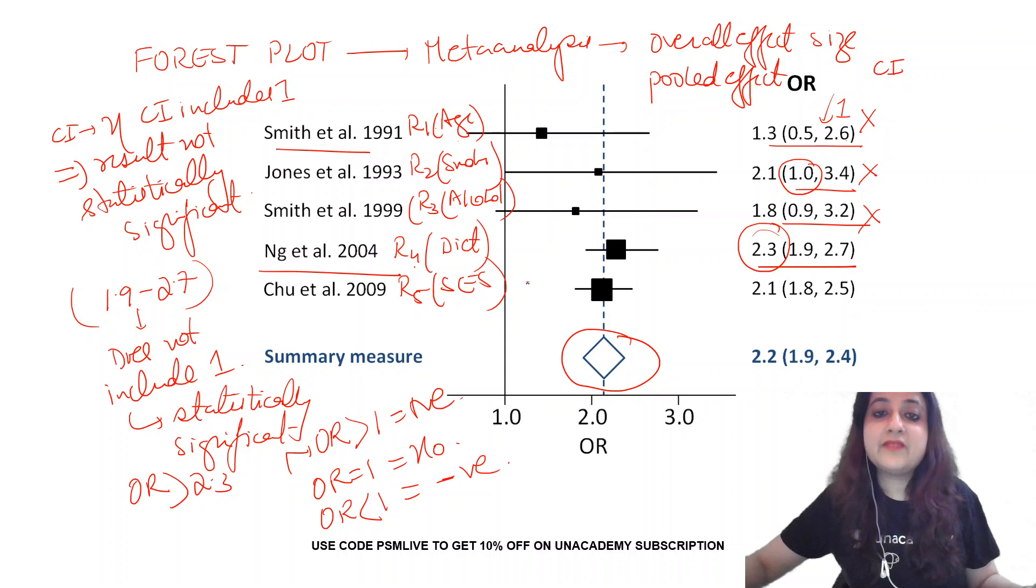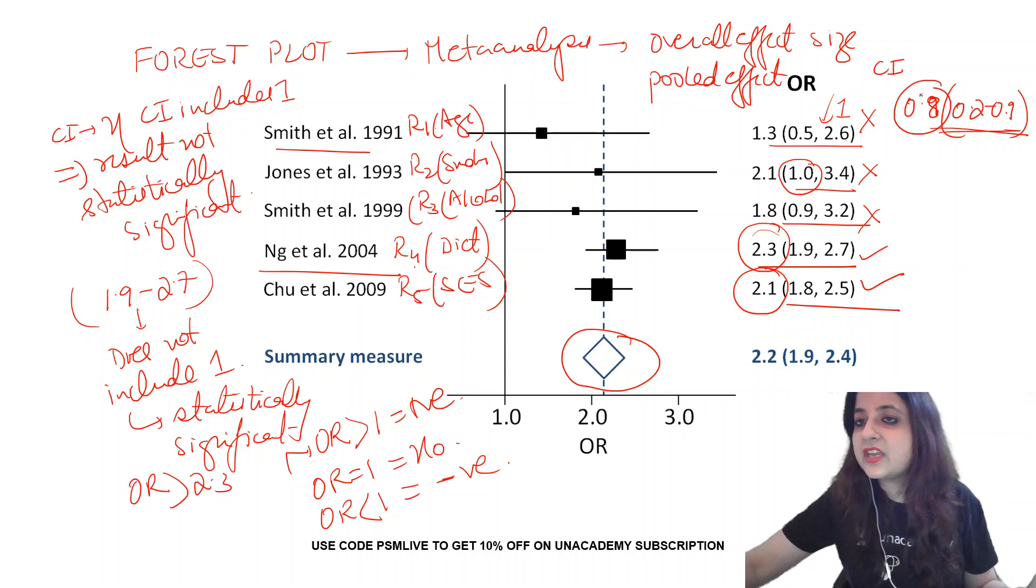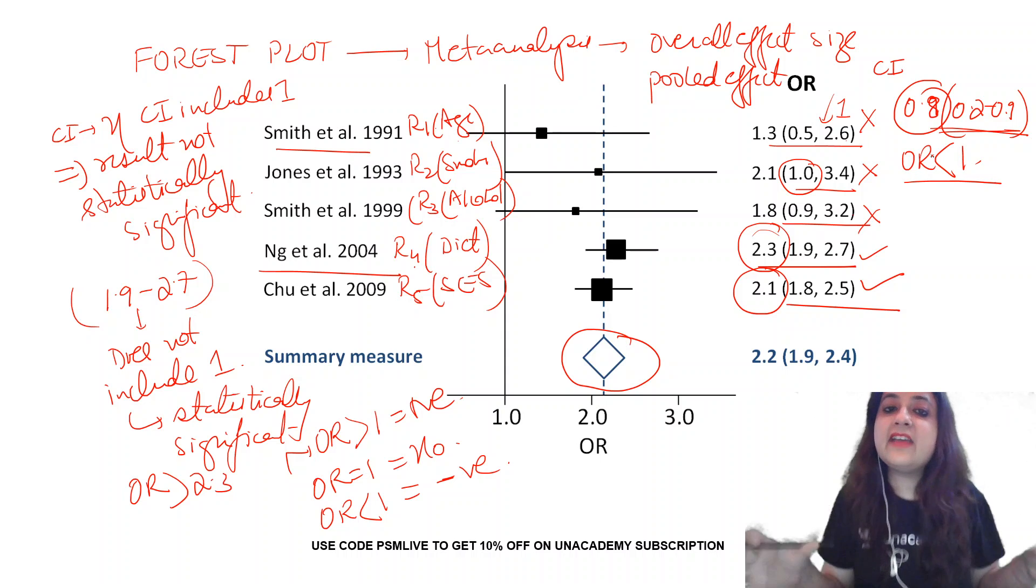Similarly, look at the last one where you're studying socioeconomic status. The interval is 1.8 to 2.5. So 1 is not included. So it is statistically significant and OR is more than 1. So it is a risk factor. If suppose there was another study and the value was 0.8 and 0.2 to 0.9, if you look at this CI, it does not include 1. It is statistically significant, but OR is less than 1. So this would have become a protective factor.